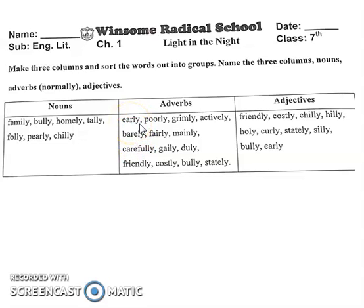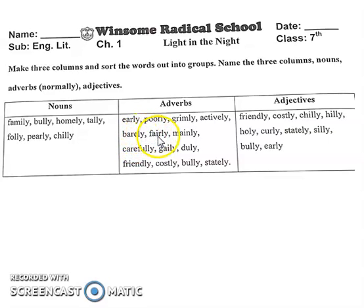اب ہمارا column ہے adverbs کا۔ Adverbs میں سب سے پہلے آئے گا: early — جلدی، poorly — unsatisfactory، grimly — means serious, gloomy or depressing، یعنی اداس۔ Actively — چستی سے، barely — almost not، fairly — منصفانہ طریقے سے۔